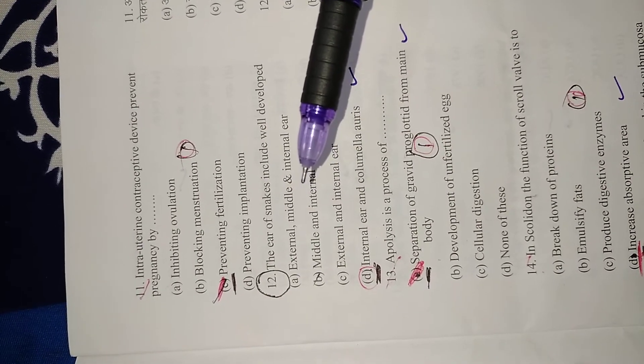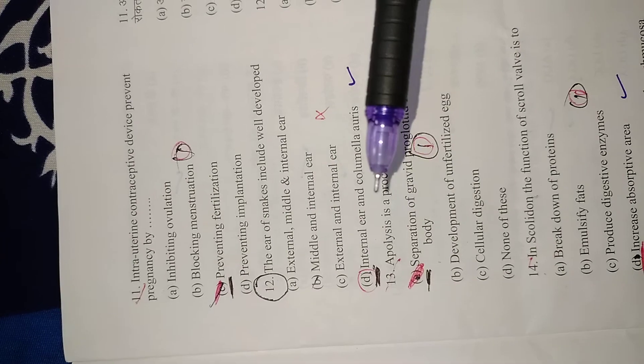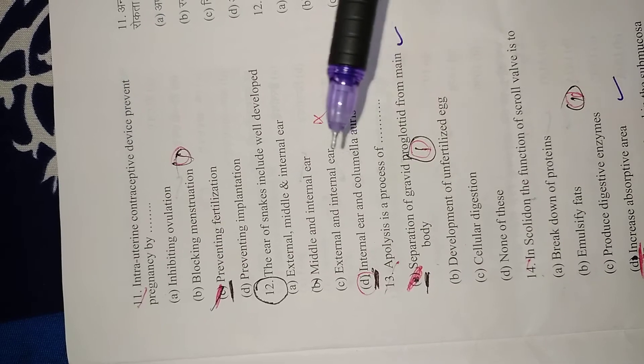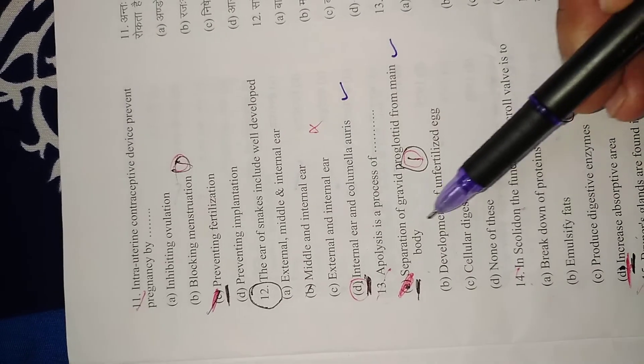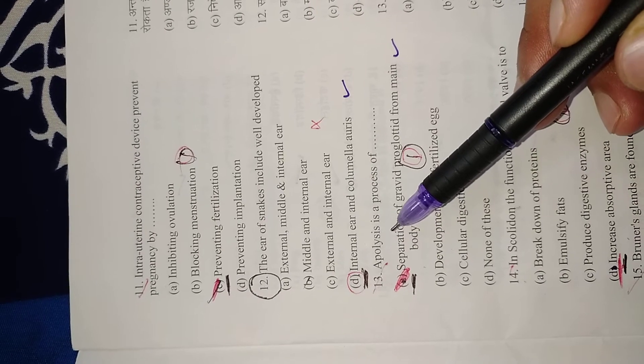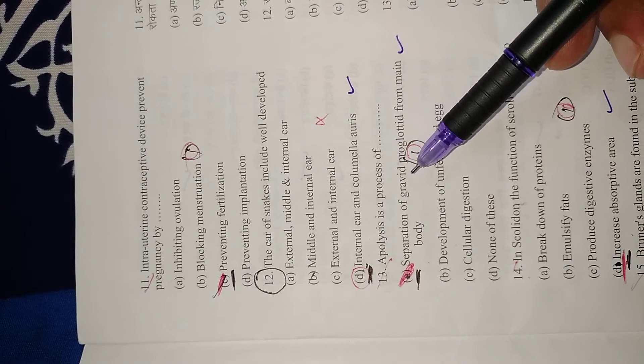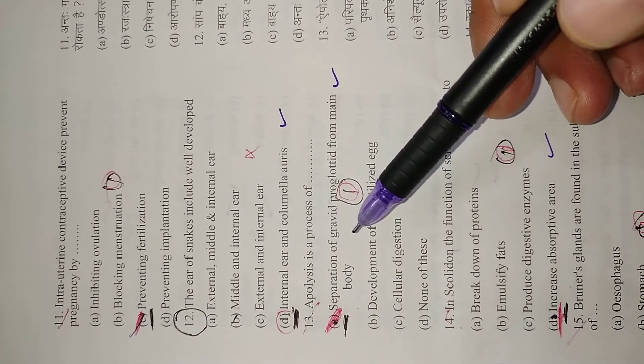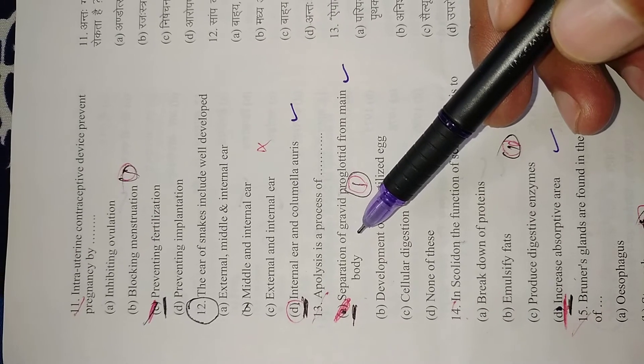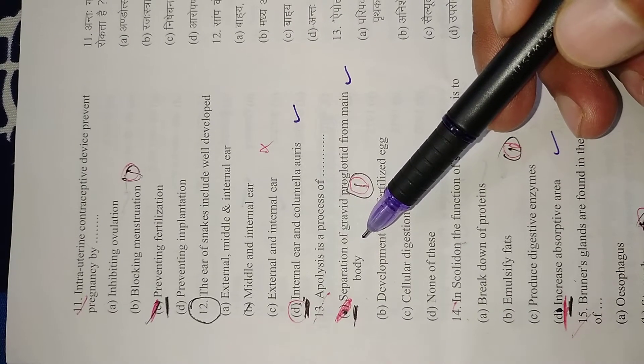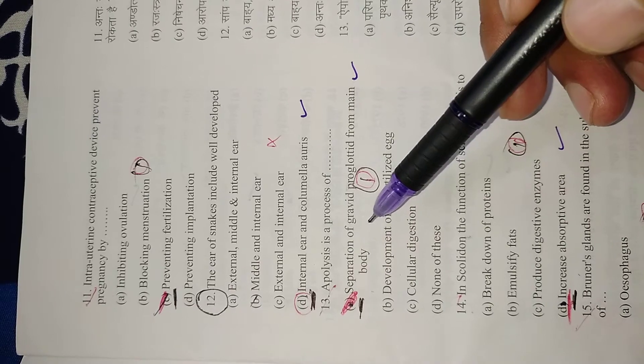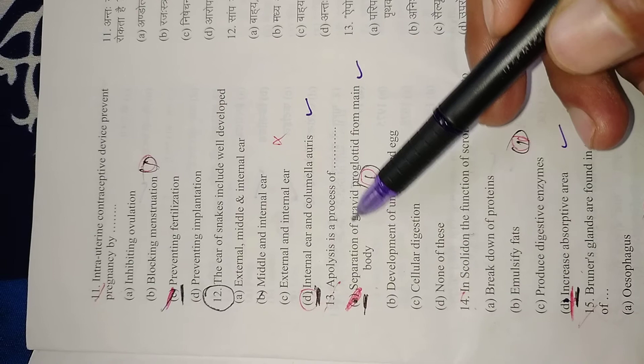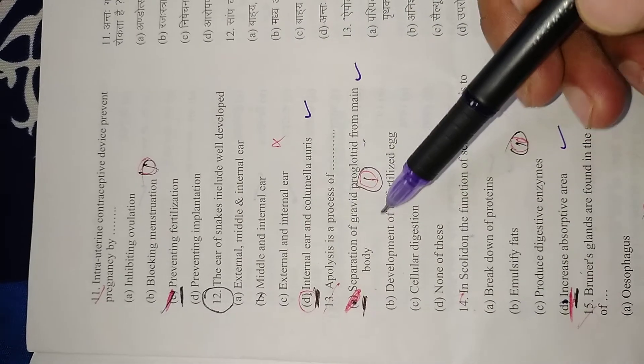Right option is D. Question 13: Apolysis is a process of? You've studied this in Platyhelminthes. The flatworm Taenia separates their proglottids. Apolysis is the process of separation of gravid proglottid from the main body. Right answer is A.